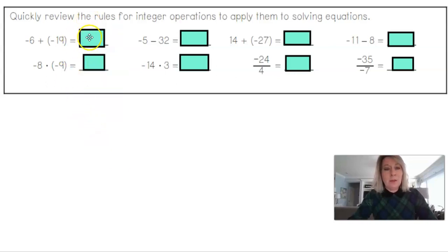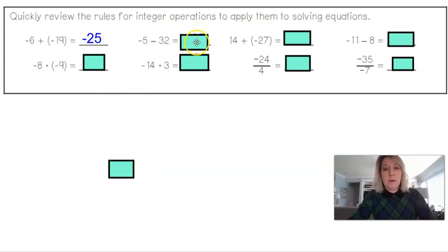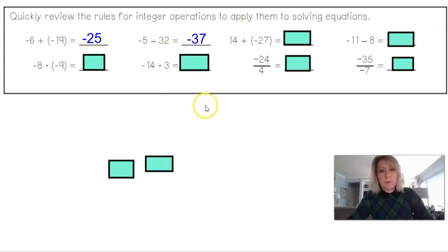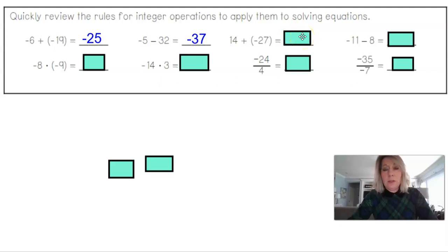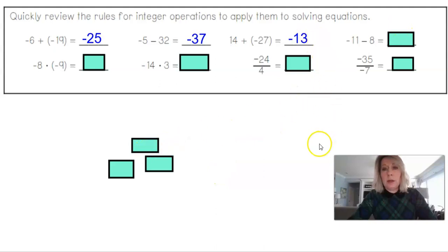Did you get the following answers? Negative 6 plus negative 19 is negative 25. Negative 5 take away 32 is like adding more negatives, so it's negative 37. 14 plus negative 27 — the negatives win since the signs are different — we subtract and get negative 13. Negative 11 take away 8 more is like adding more negatives: negative 19.